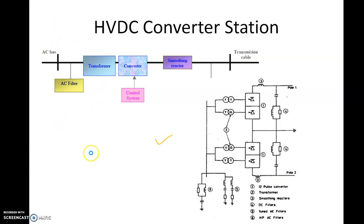When you transmit power over a long distance using HVDC, you have to do so using converters. HVDC transmission works in a simple manner: the AC side provides AC power, which is converted into DC power and then transmitted over the transmission system — it can be underground cable or overhead line. When the transmission reaches the other side, it is converted back to AC. The converter station costs the most in the HVDC system; the transmission lines themselves do not cost very much, but converter stations carry the majority of cost.